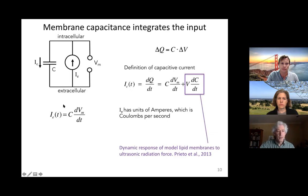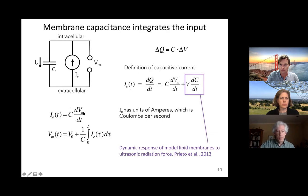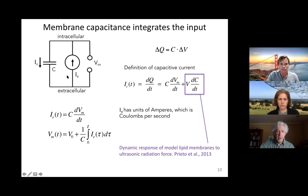This means the current flowing onto the capacitor equals C dV/dt. Rearranging for voltage, we get: V equals a constant plus one over C times the integral of the current. This means the capacitance is effectively acting as an integrator — it integrates the current flowing onto the cell membrane, which influences the change in voltage.